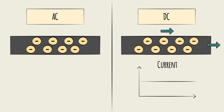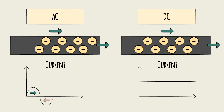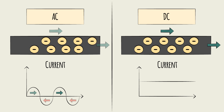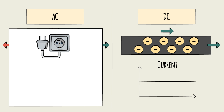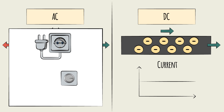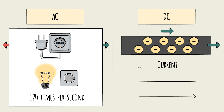In AC, current moves back and forth like a wave with peaks and troughs. This type of current moves forward and rises, and once it reaches a maximum, it starts to decline until it reaches a minimum, then reverses direction. AC is the most common type of current electricity and the type we get from wall sockets. Because alternating current fluctuates, a typical light bulb connected to a wall socket gets brighter and dimmer in cycles, though it's not noticeable to the human eye because this happens 120 times in one second.